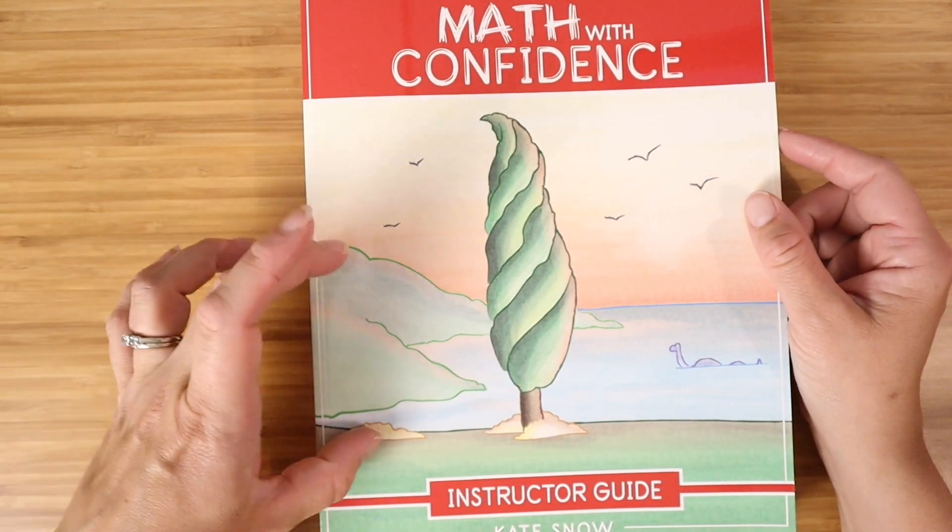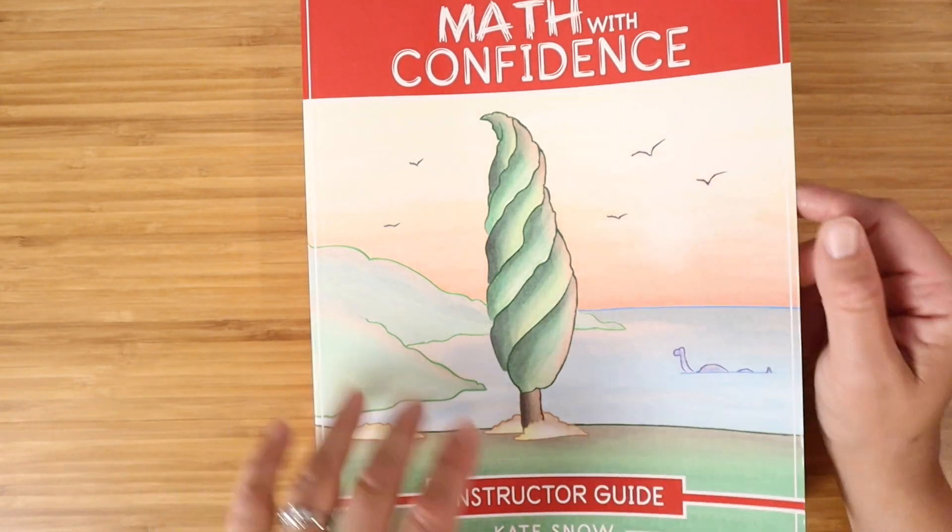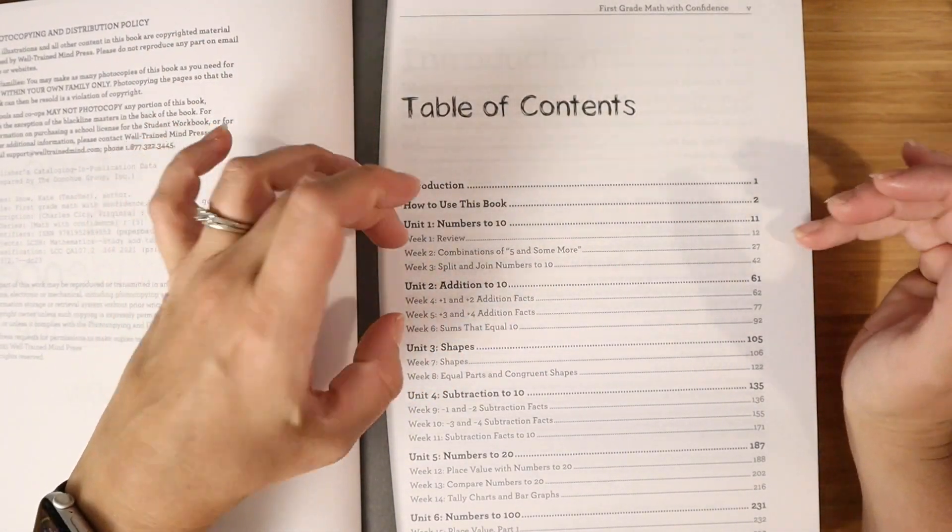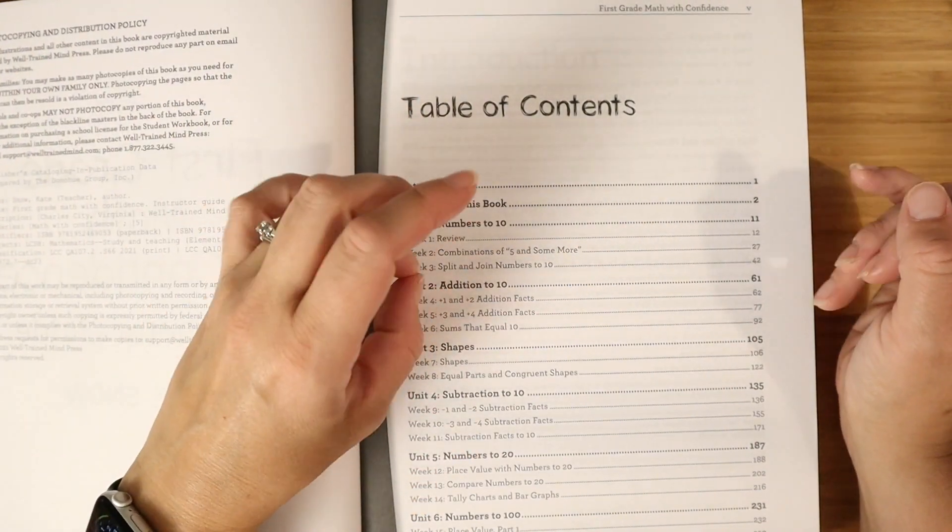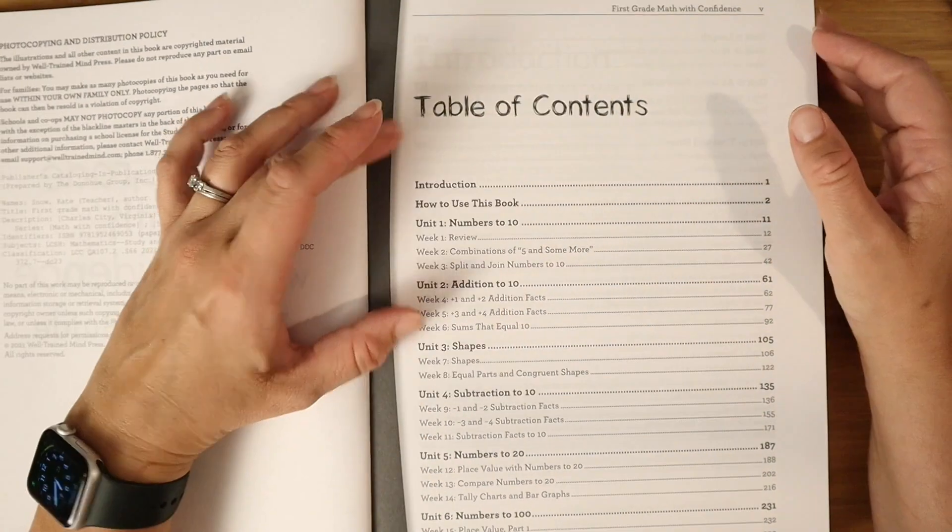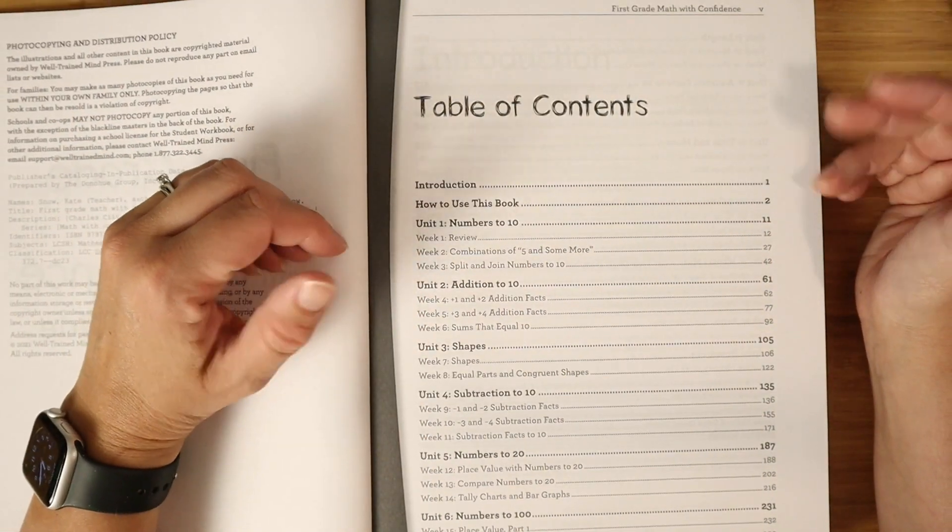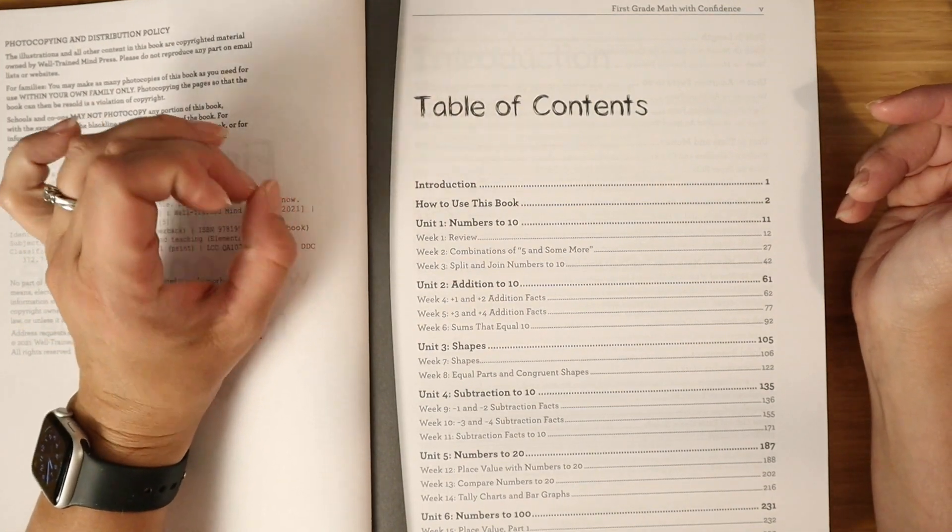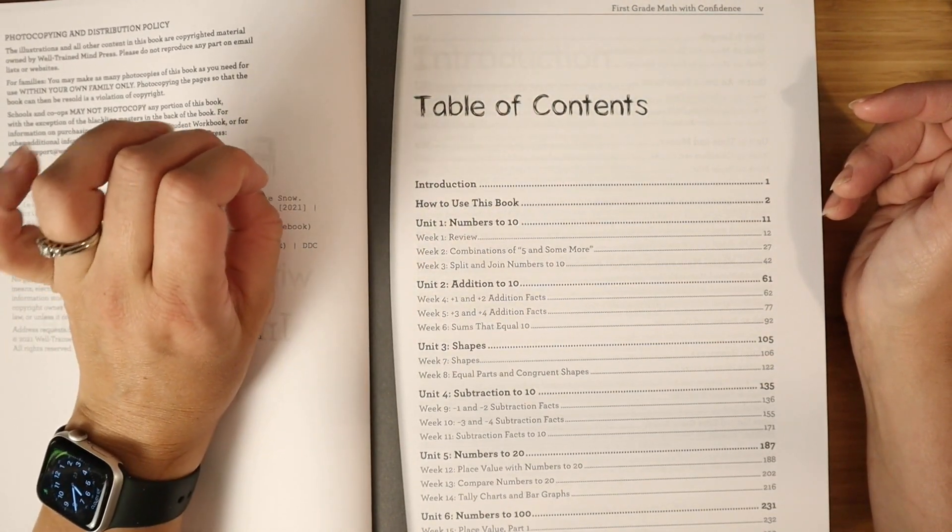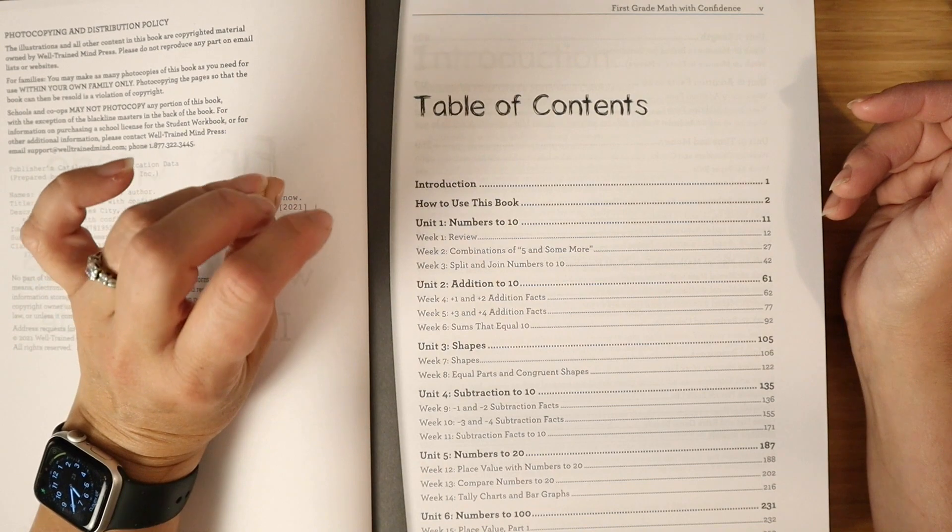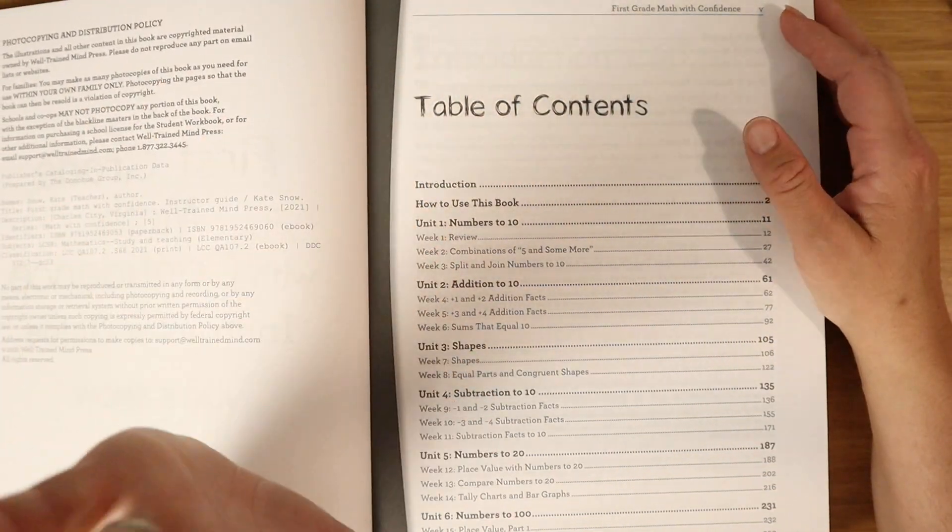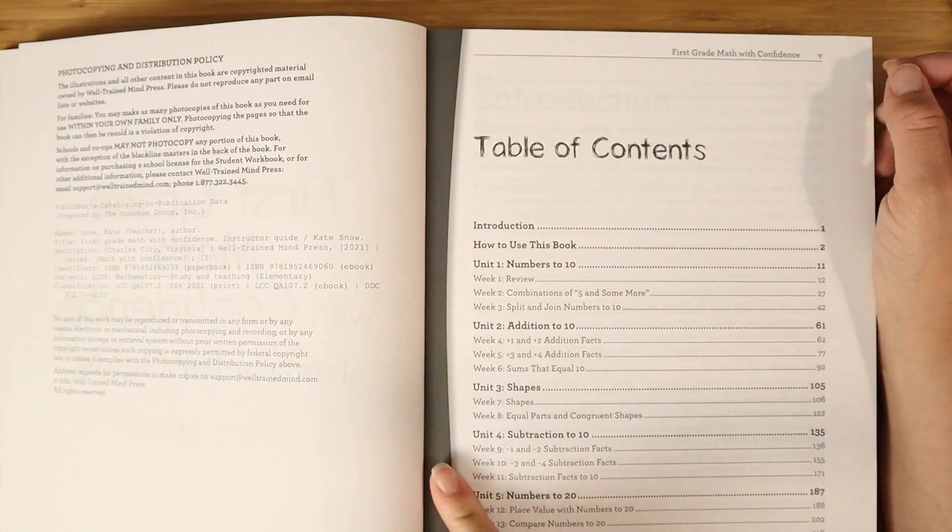Math with Confidence is really a no-frills approach to teaching math. It is affordable. First grade, I believe, is $45 to $50 for the total. They do go on sale about twice a year on both Well-Trained Mind and on Amazon. They also offer PDF versions if you prefer to print your own or print as you go. I keep coming back to math with confidence, and we're just going to stick now. It's here to stay.